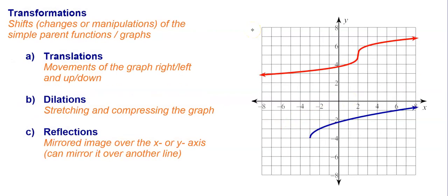As we saw with all the other functions, like absolute value and quadratics, these functions — whether even or odd roots — can be moved left and right, up and down, which are translations; can be stretched or compressed, which are dilations; or they can be reflected over the x- or y-axis or another line.